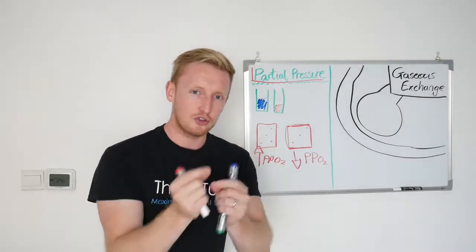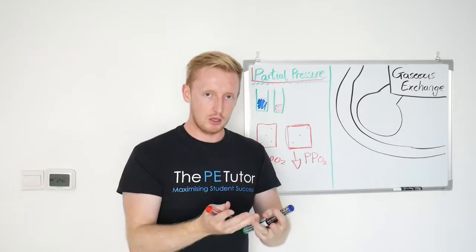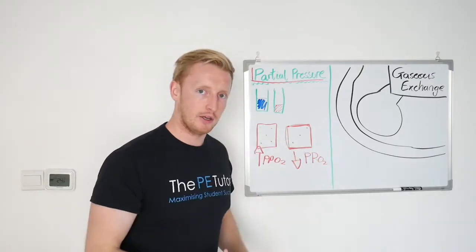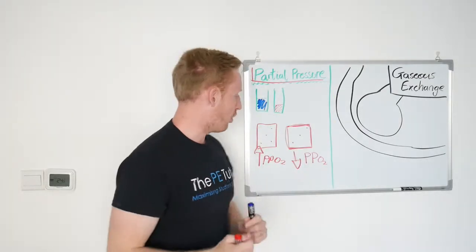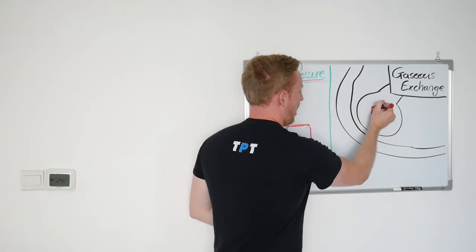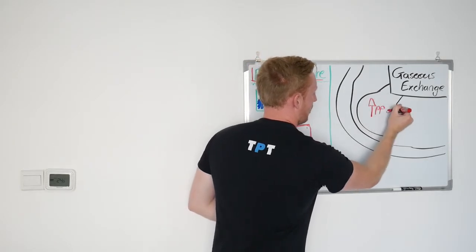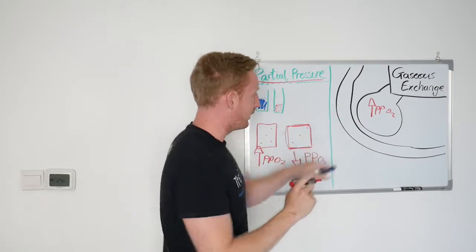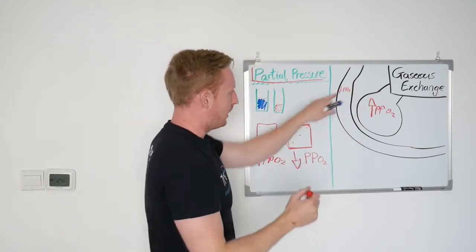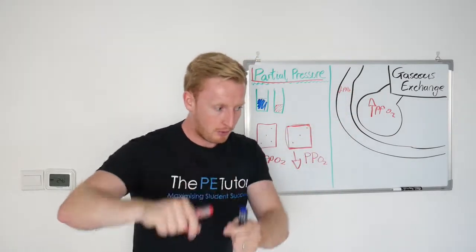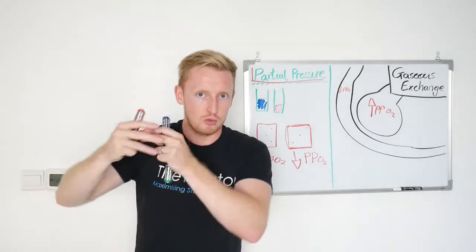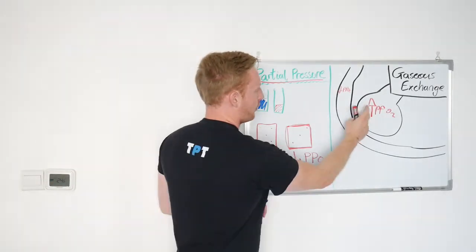Partial pressure refers to the concentration, or what percentage of a mixture is made up of the gas inside it. So when we look at the air that comes into the alveoli, it's got a high partial pressure of oxygen compared to the blood, which has a low partial pressure of oxygen. It's low because we've used oxygen around the body. When the blood comes back up to the lungs to collect oxygen, we've already dropped off some of it, so we're low on oxygen molecules. We've now got a difference — an area of high pressure and an area of low pressure.